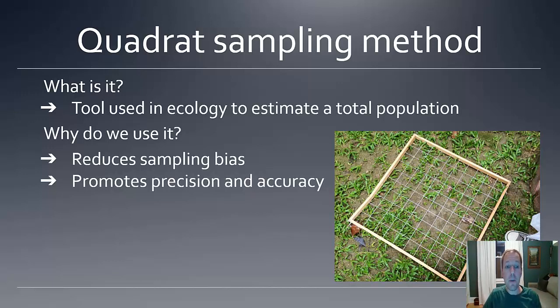This method reduces sampling bias, by increasing more randomness and less decision-making on the part of the actual sampler in choosing which organisms to count. The method here promotes precision and accuracy, helping to increase the quality of that population estimate that you're going to calculate.